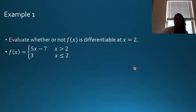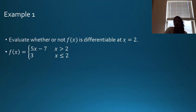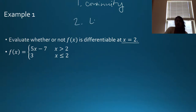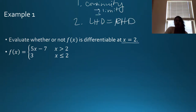Let's do our first example problem. It says: evaluate whether or not f(x) is differentiable at x = 2. The three things I'm going to figure out are: first, continuity — really two things — and then whether my left-hand derivative equals my right-hand derivative. For continuity, I'm going to look for a limit and the function value.